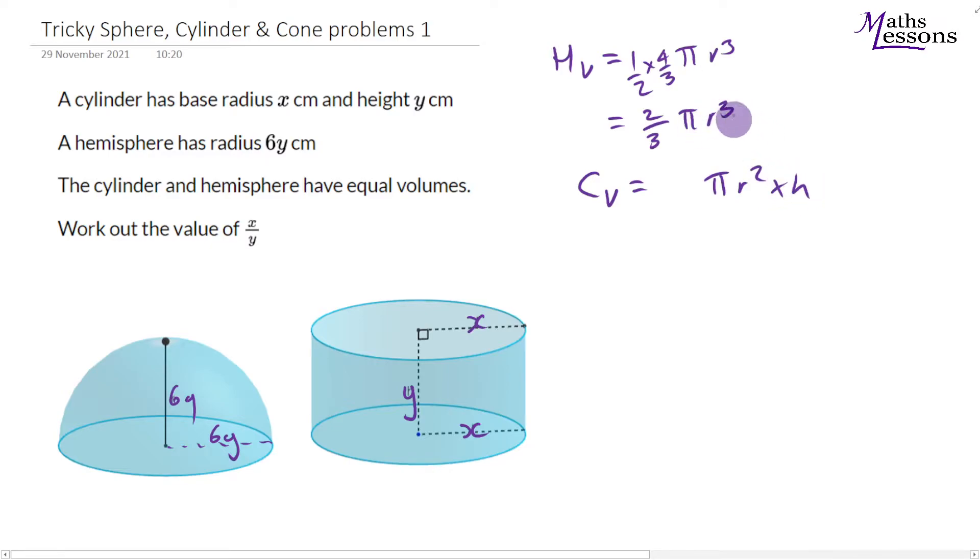So if we now put the fact that r is equal to 6y into this, we know the hemisphere volume will be equal to two thirds times pi times 6y cubed. That gives us our hemisphere volume. And our cylinder volume is going to be equal to pi times x squared times y.